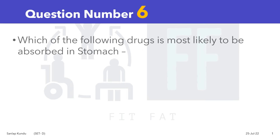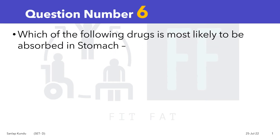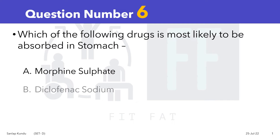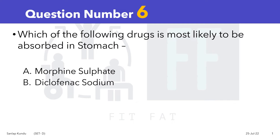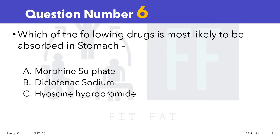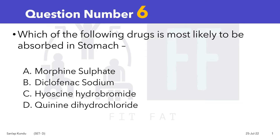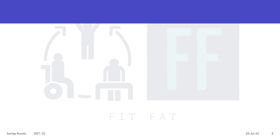Question number six: which of the following drugs is most likely to be absorbed in the stomach? Option A: morphine sulfate. Option B: diclofenac sodium. Option C: hyoscine hydrobromide. Option D: quinine dihydrochloride. Now before getting into the answer, let's see the effect of pH on drug absorption.